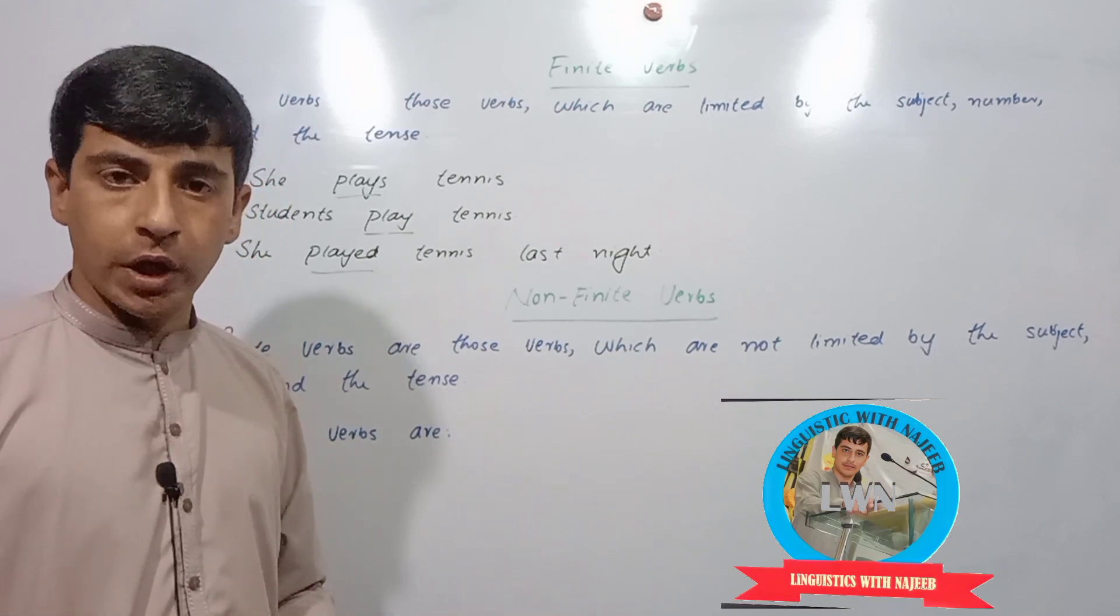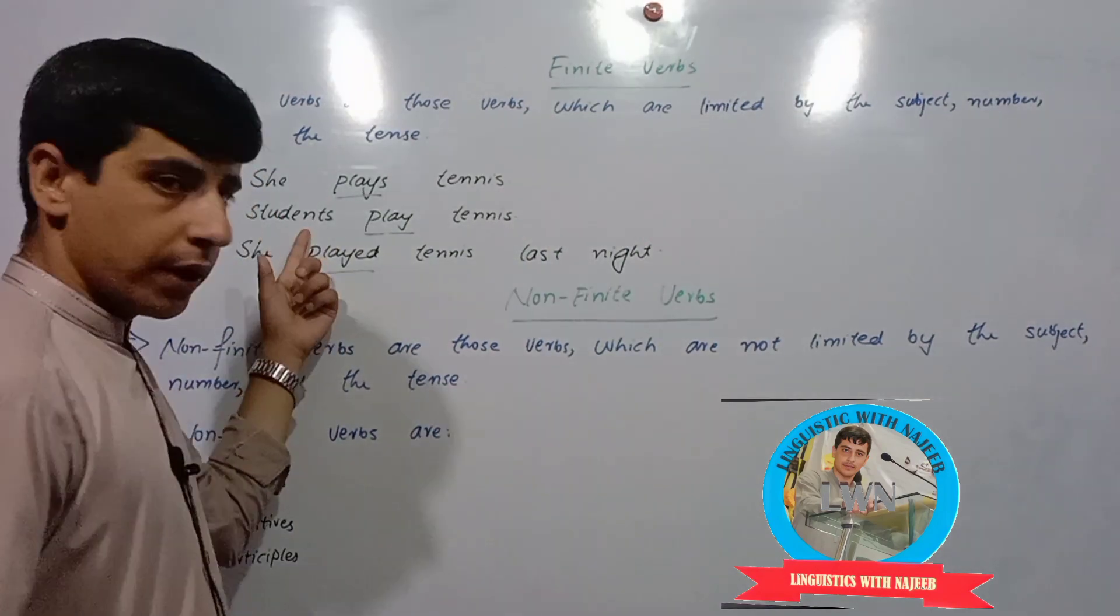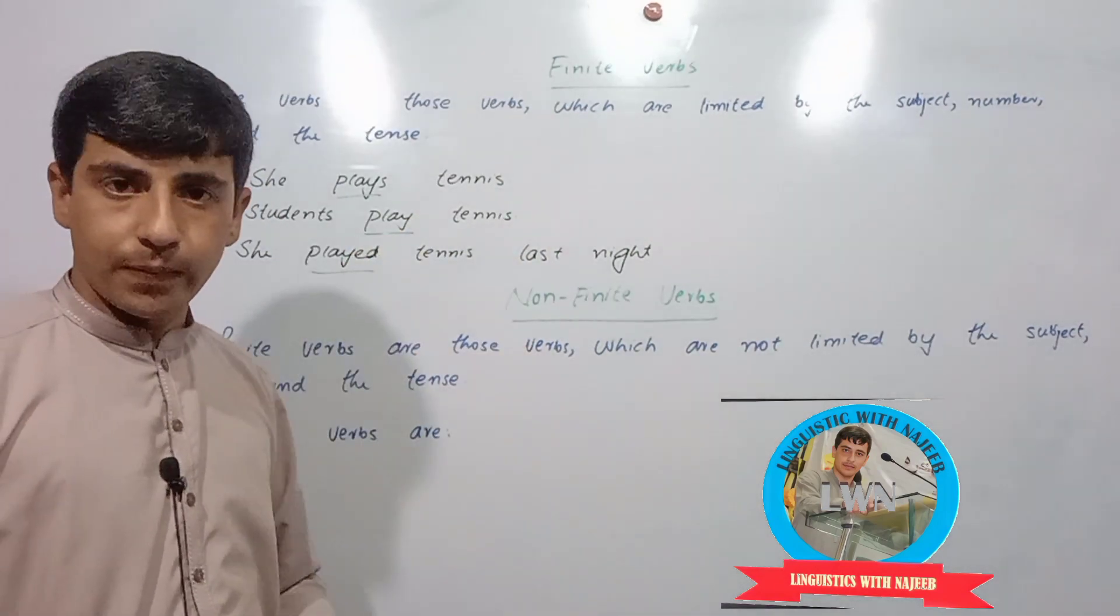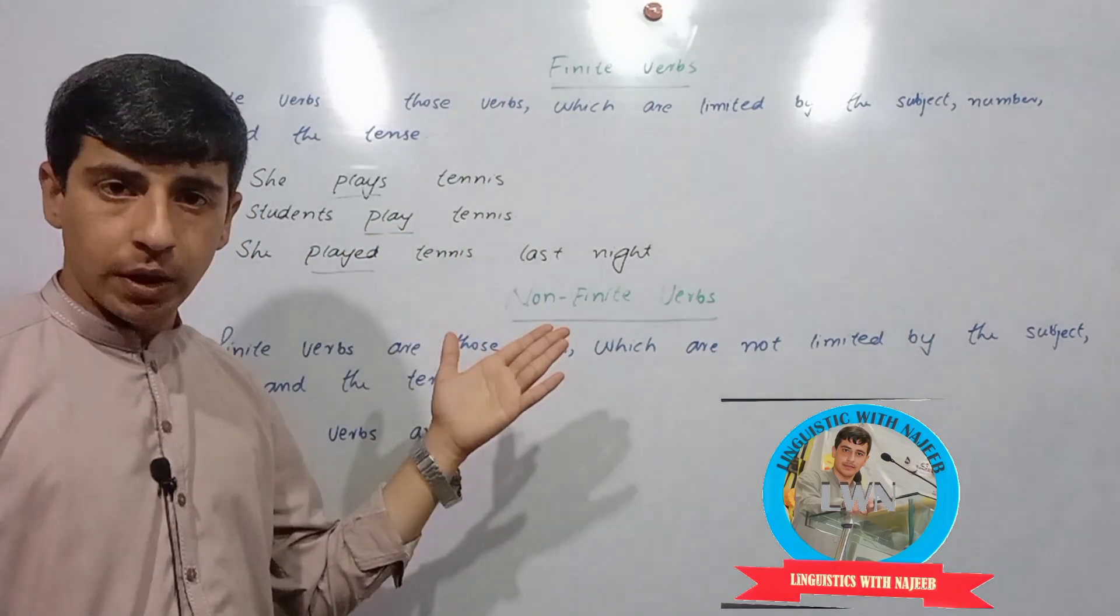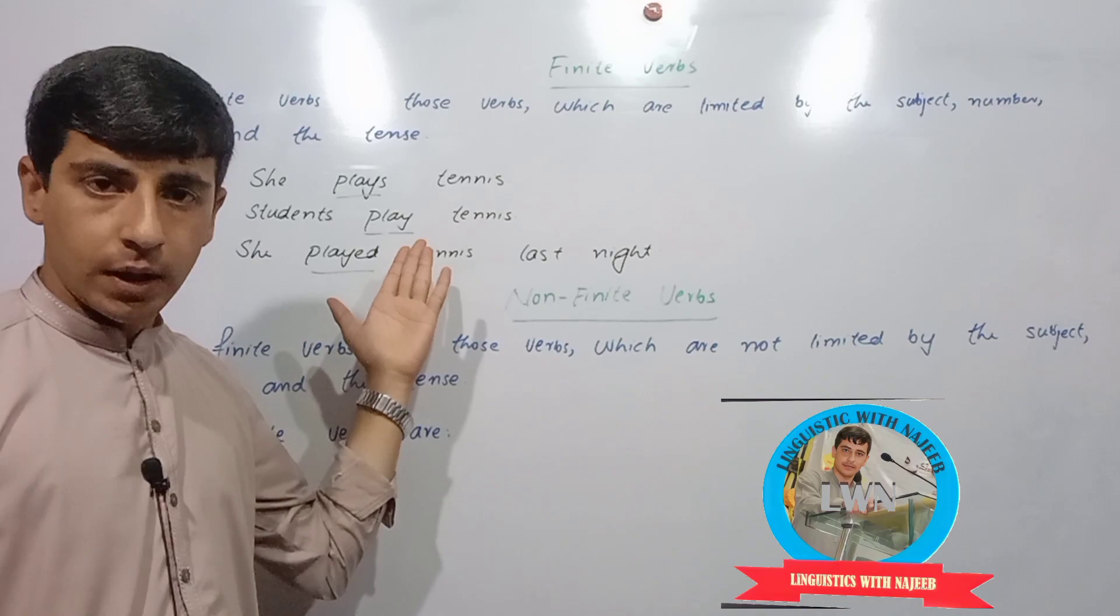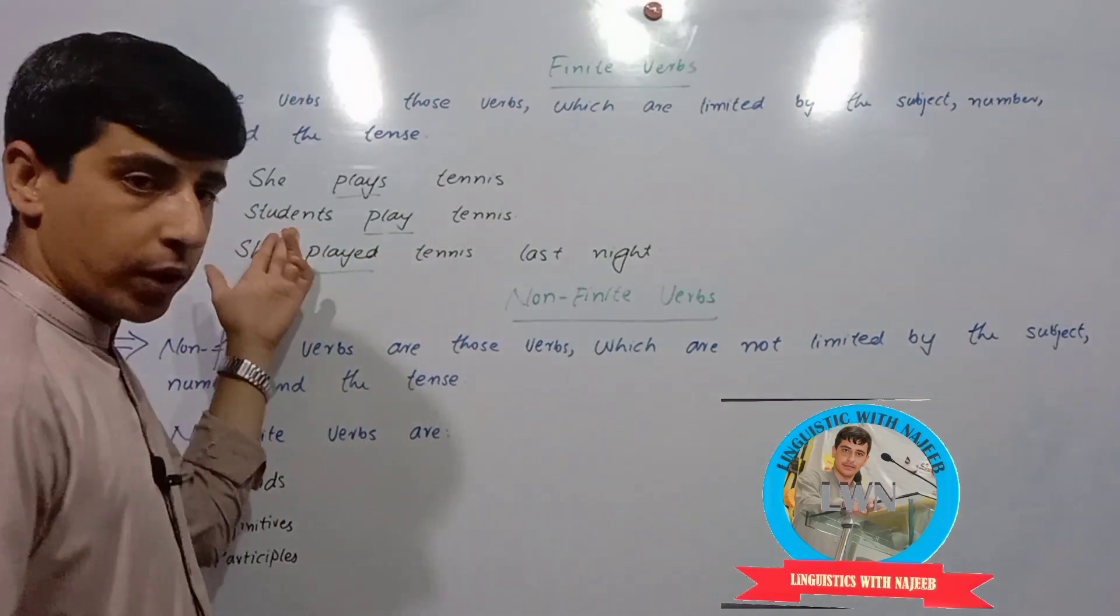Example number two, students play tennis. So, this verb changes according to the subject. We have got blue subject, we have got blue numbers.